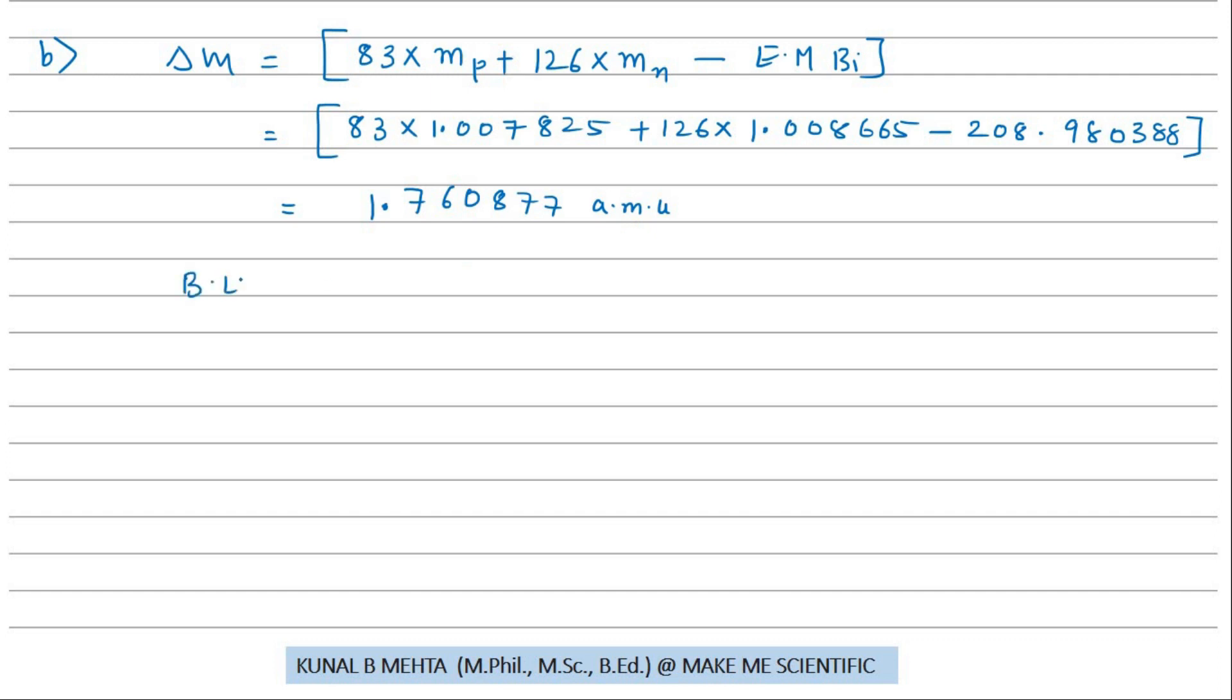Now, binding energy is Δm times c². Again using Δm as 1.760877 times 931.5, this will be our answer in MeV, which is about 1640.26 MeV.